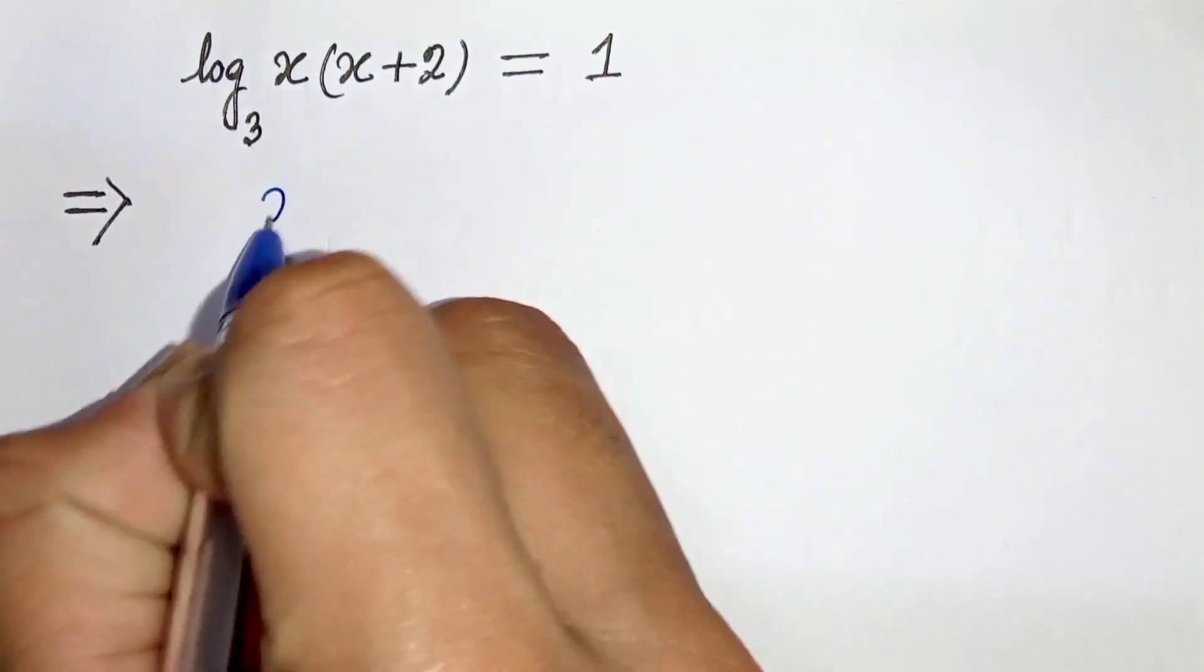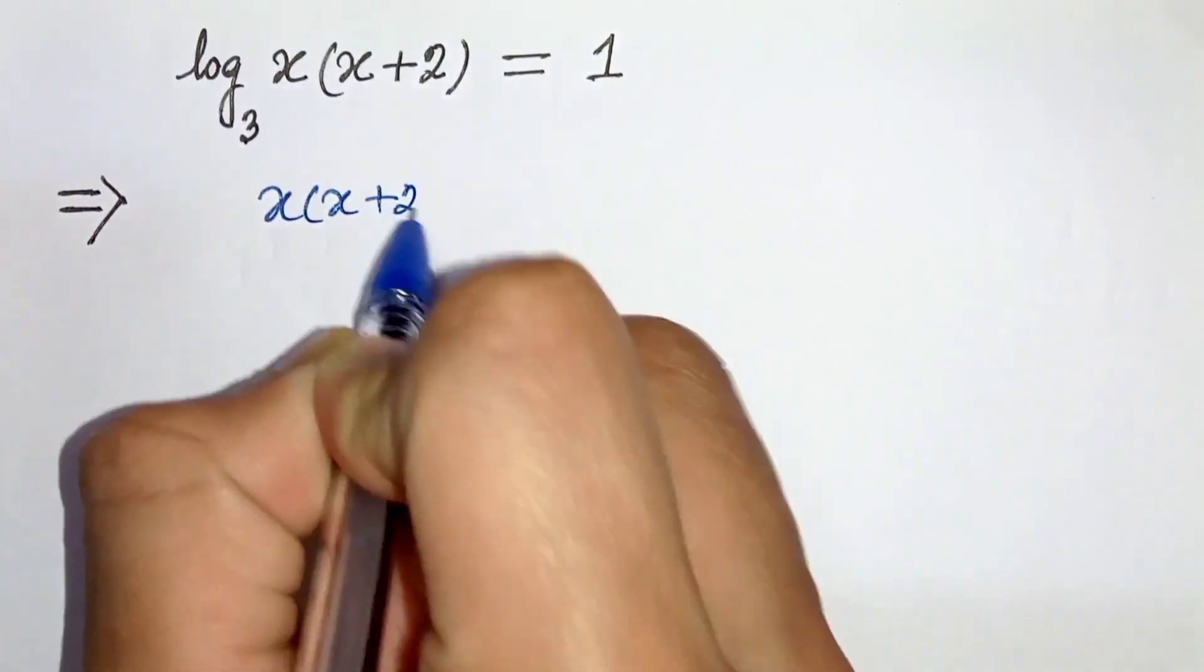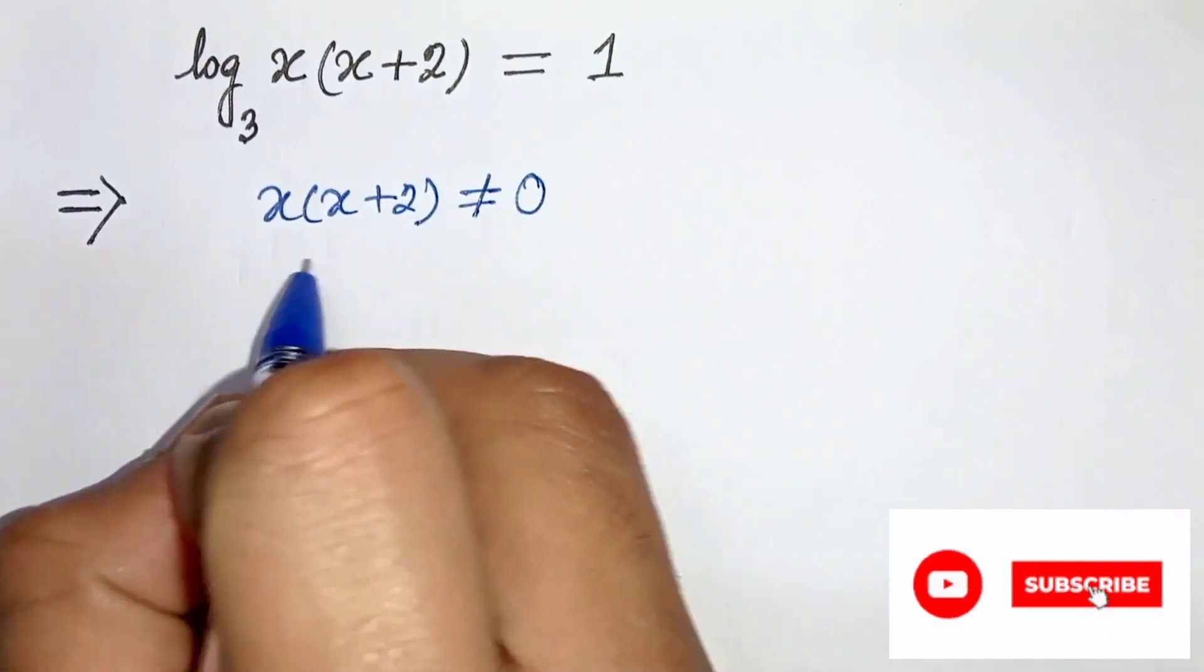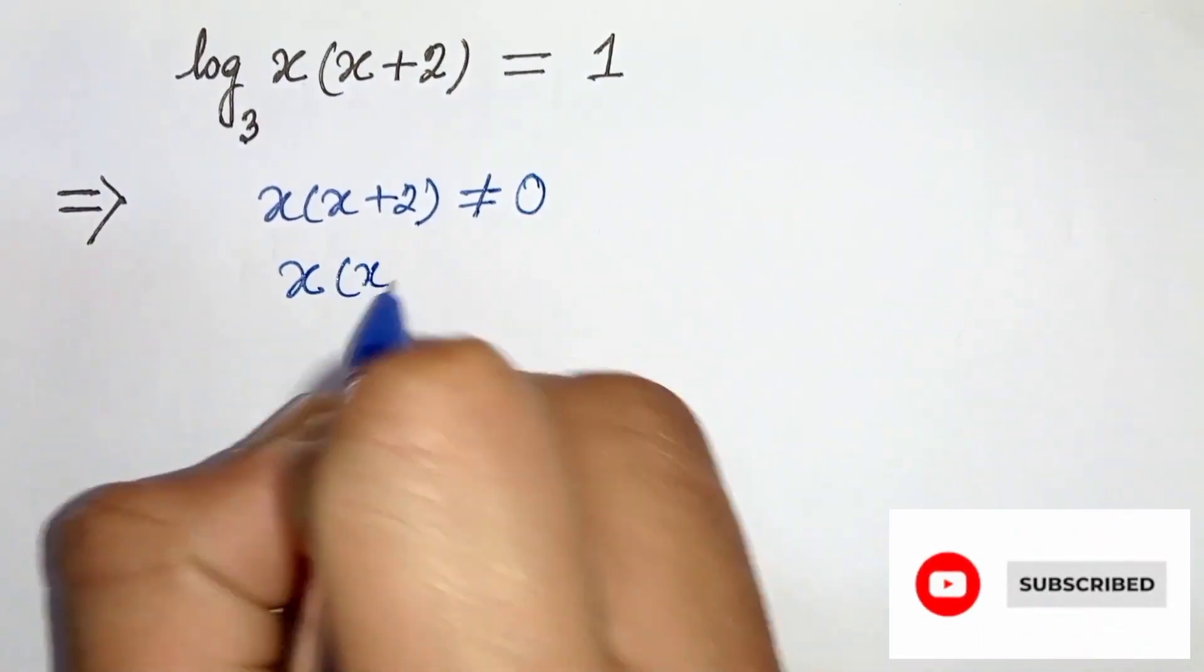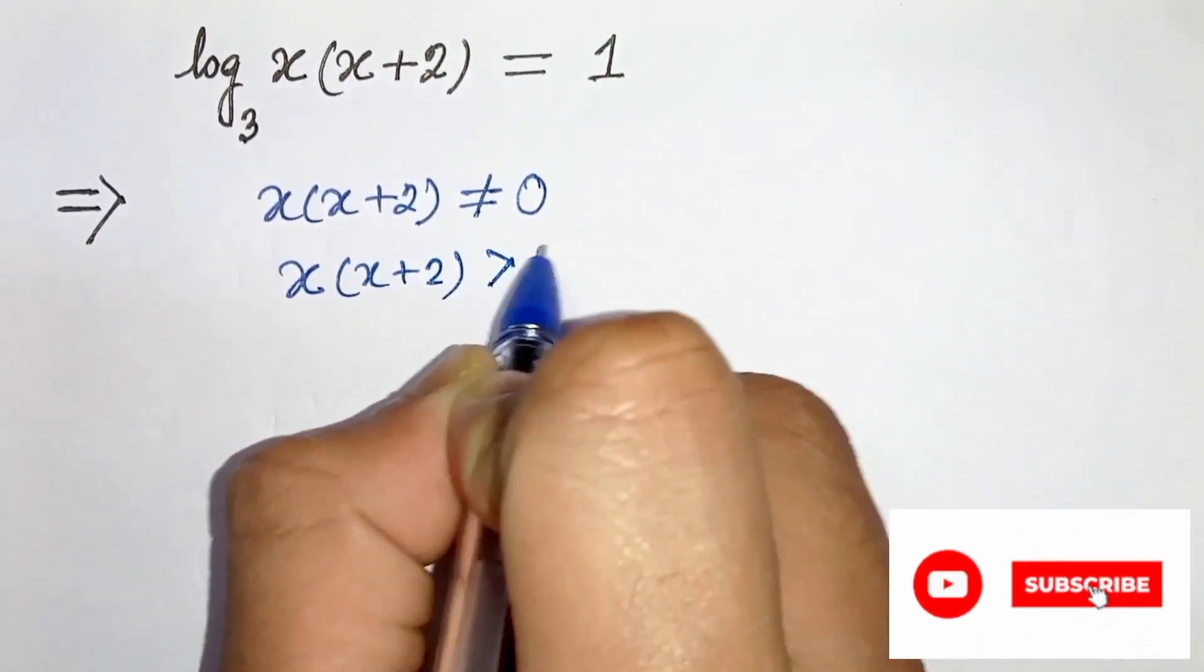That means x times x plus 2 either not equal to 0 or x times x plus 2 greater than 0.